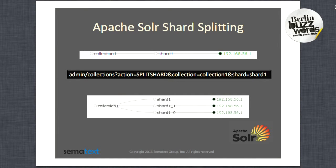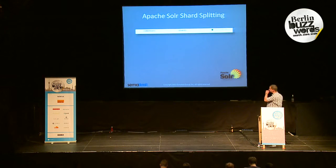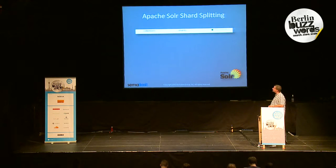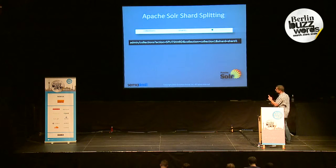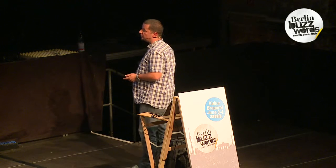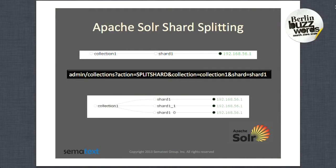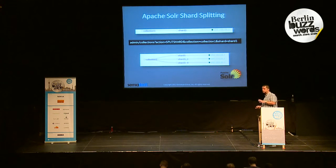Let's see how collection split works. Assuming we have a single collection called collection1 with a single shard called shard1 located on a machine with a given IP address — if we send the split command to Solr, the collection would be split into two shards: shard1.1 and shard1.0. The original shard1 would be left but can be deleted. The shard1.1 and shard1.0 will have the documents from the original shard split among them. It's a very nice feature — if you use Solr, you can try it out.